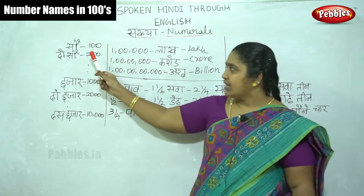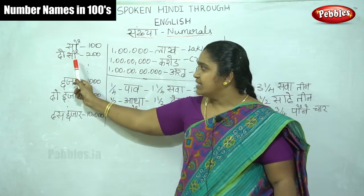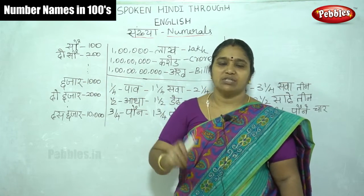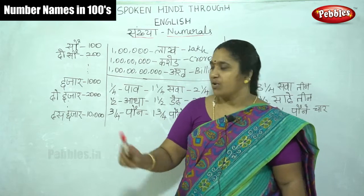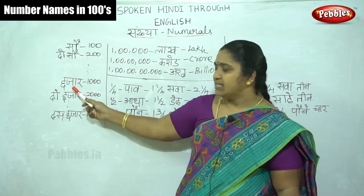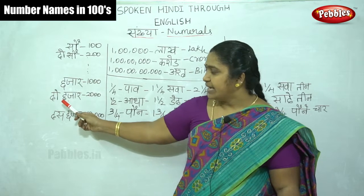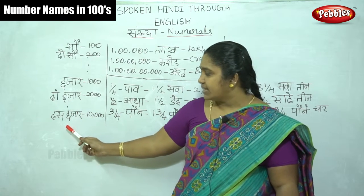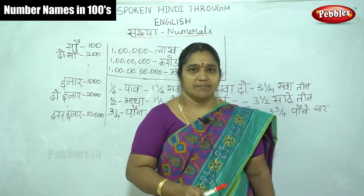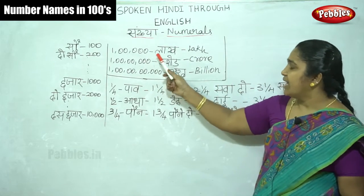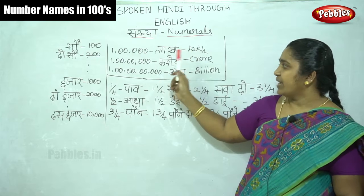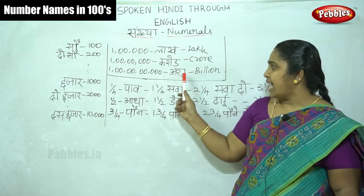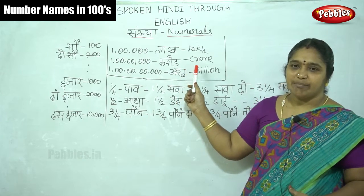For Sau, we add the number before it — Do Sau, Teen Sau, Chaar Sau, Paancha Sau, Saat Sau. Then Hazar for thousand — Do Hazar, Teen Hazar. Extending that: Das Hazar, then lakh, then Karod which is crore, and then Arab which is billion.